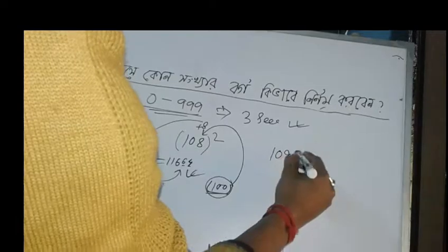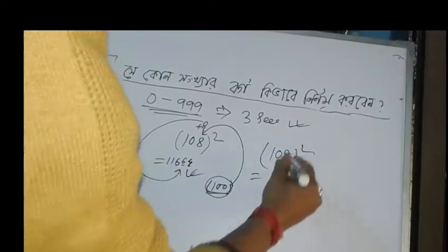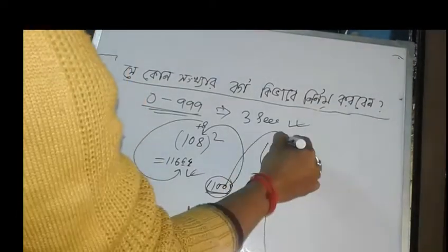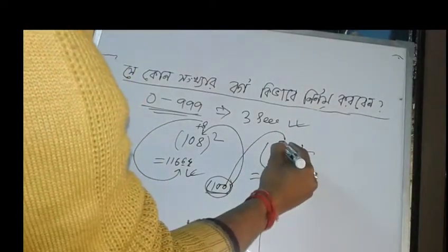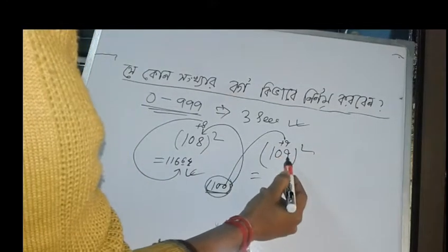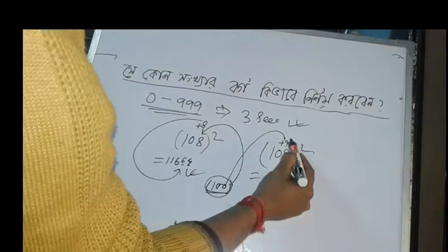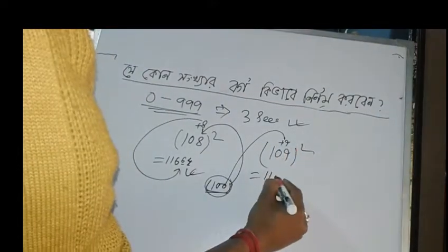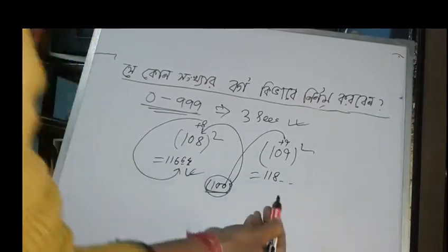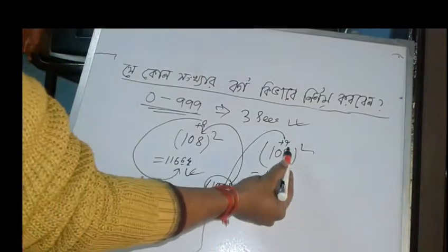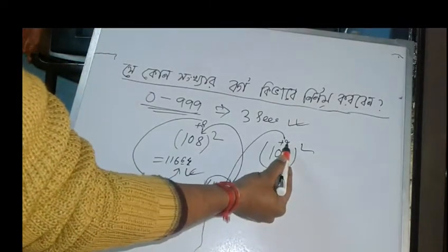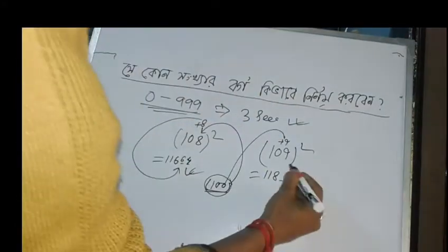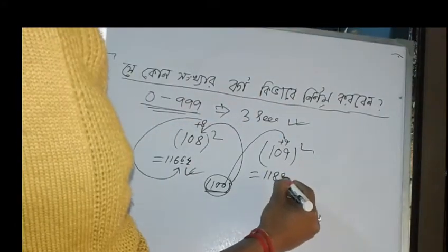Now, 109 squared. How do you do? Base 100, plus 9. So 109 plus 9 equals 118. Then the last two digits: 9 squared equals 81. So 109 squared equals 11881.